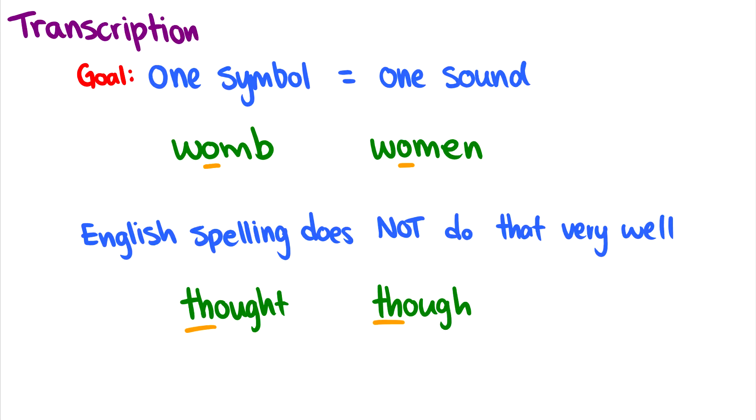Now we have a goal in phonetics, and this is a very important goal. We want one symbol to make one sound. And this is a way of training our ears and being able to identify speech sounds. Now, letters are terrible for expressing sounds.